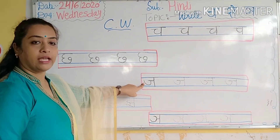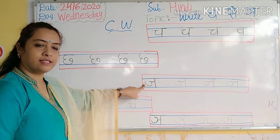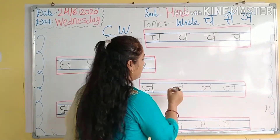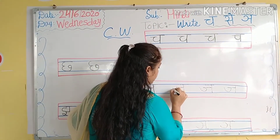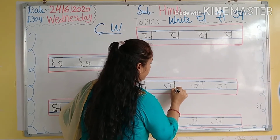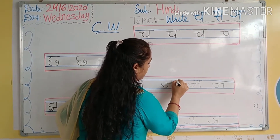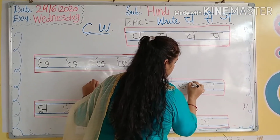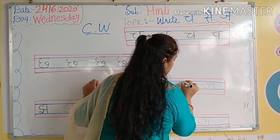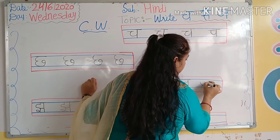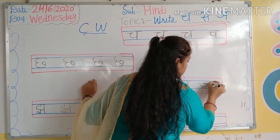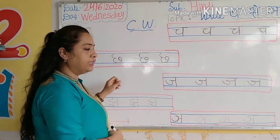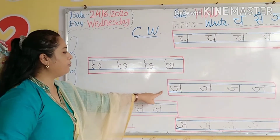Then, kya hai ye? Chh se chhat. Kids, round time with me — chh se chhat. Aapko apni book mein ye press karna hai. Aap sabko mere saath likhte jana apni book mein.